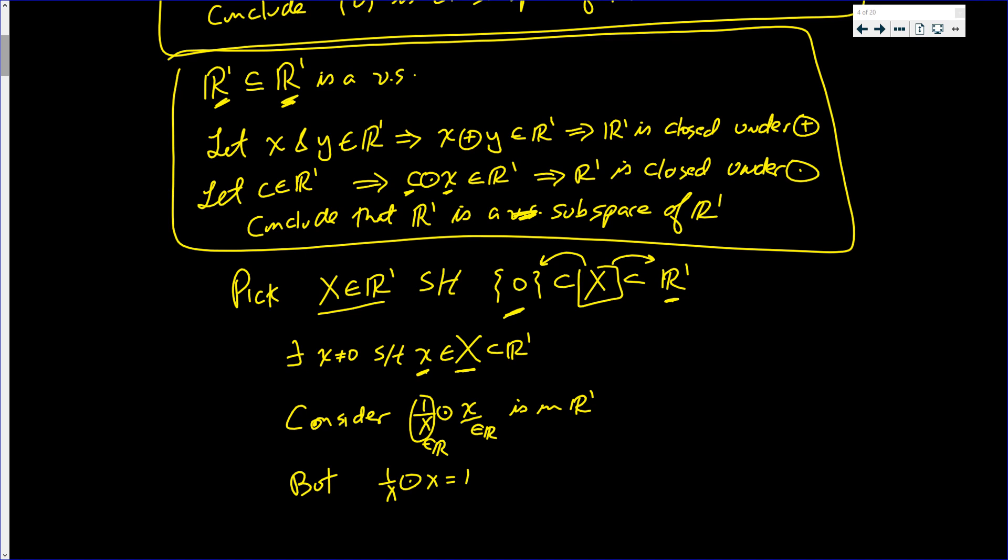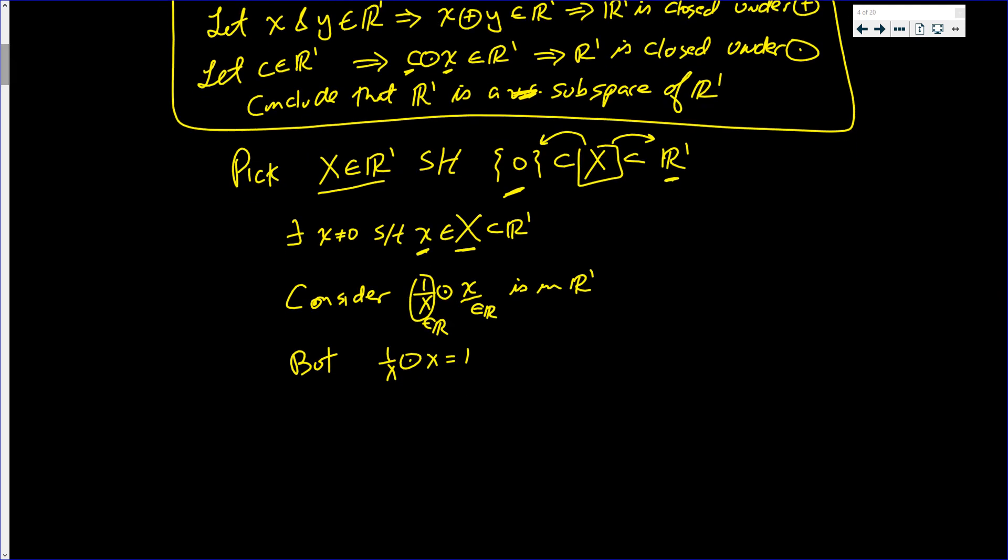But, 1 over X circle X is 1. It's 1. Because this is nothing more than X inverse. And multiplication in R1 circle. That's 1.